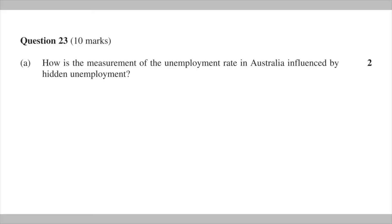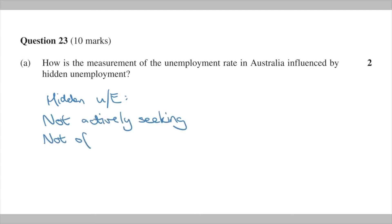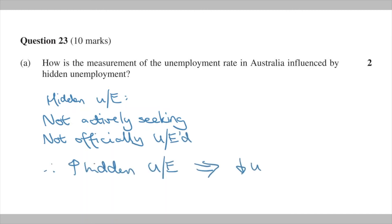To wrap up this video, I want to look at this short answer question that explores the relationship between the participation rate and the unemployment rate. 2015's question 23 asks how hidden unemployment can influence the unemployment rate. Let's assume that this increase in hidden unemployment is made up of unemployed no longer actively seeking work. This means they do not fall under the official definition of unemployment, and the unemployment rate would therefore fall as a result. This should suffice for two marks worth of detail.